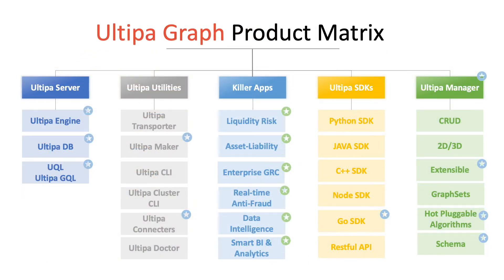The product matrix of Ultipas Graph includes Ultipas Graph database server, manager, toolkit, and killer applications, ranging from real-time decision making to liquidity risk management to asset reliability management and smart BI and advanced analytics system.